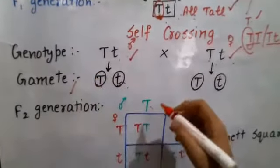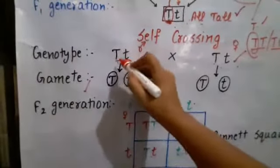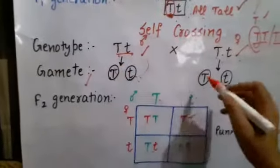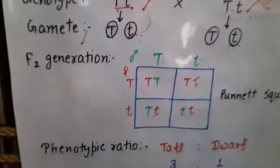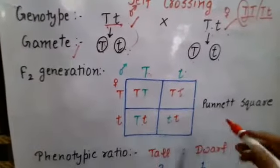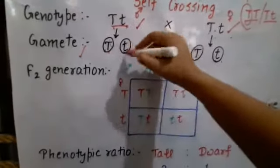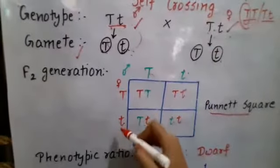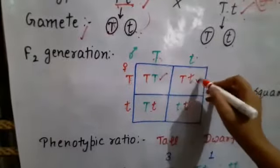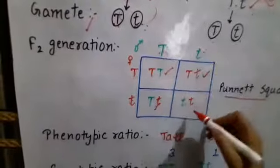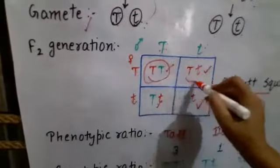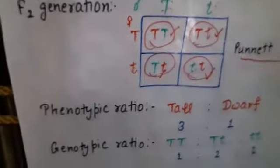Now it is the time for formation of gametes. From Tt, two types of gametes are formed: capital T and small t — the same for both parents. Now we have to cross these two gametes with these two. To avoid confusion, we have made a square called the Punnett square. The male gametes and female gametes are placed on the square, and when they fuse, four genotypes are formed: TT, Tt, Tt, and tt.